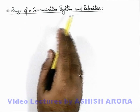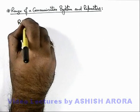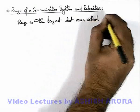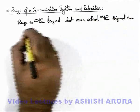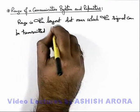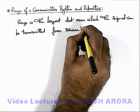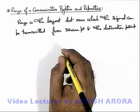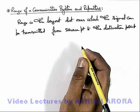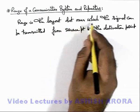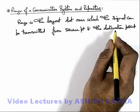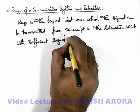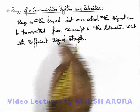Let us now talk about the range of a communication system and repeaters. Range is the largest distance over which the signal can be transmitted from the source point to the destination point with sufficient signal strength. Every communication system has a range beyond which the signal strength decreases below a detection limit. Sufficient implies the signal should be up to a level which can be detected.